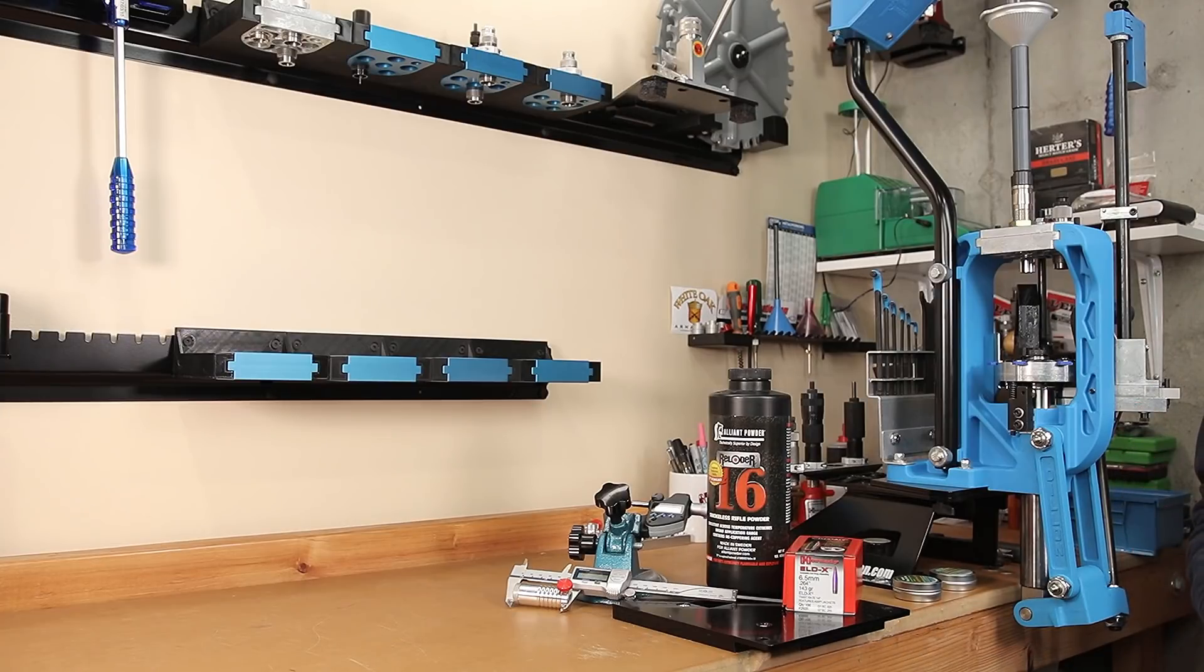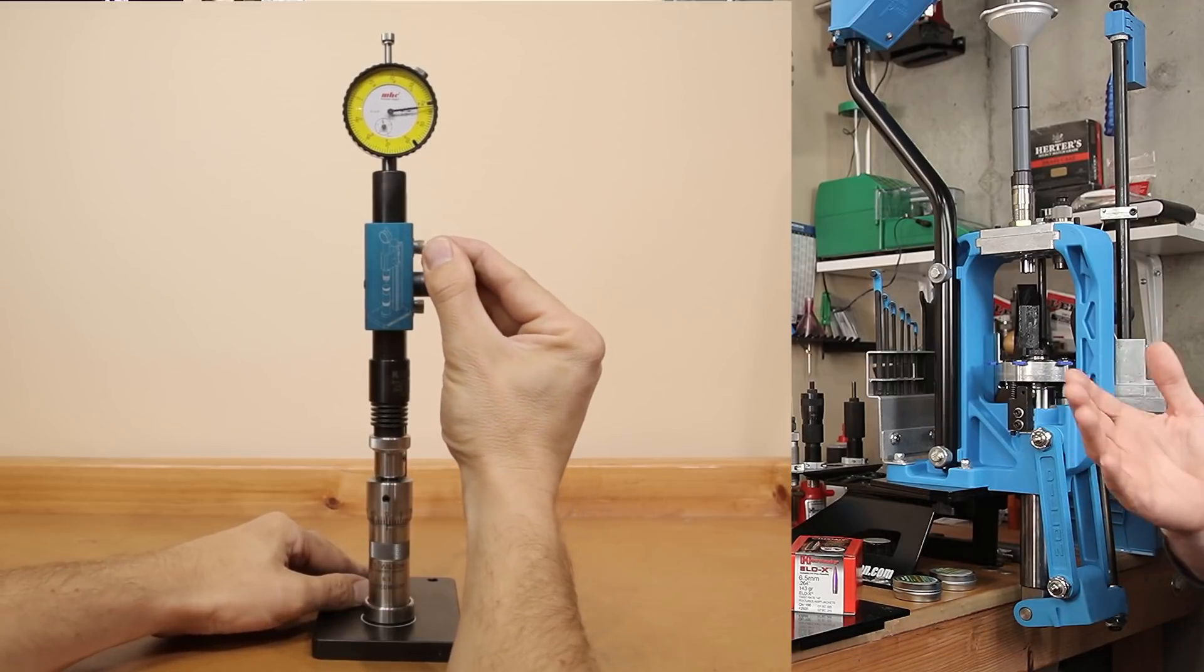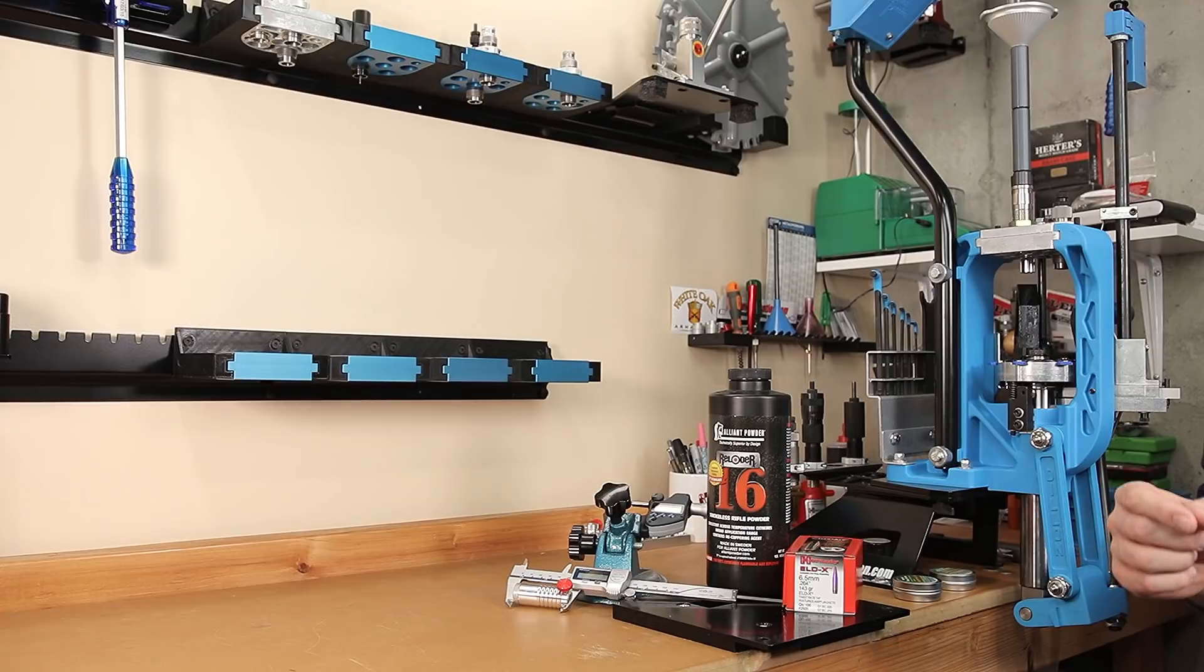If shooting smaller groups is your desire, then running a jump test or seating depth test may be the most effective way of shrinking your groups. In this video, I'm going to review this step of the load development process, show how we got here, and go over the data from today's testing.